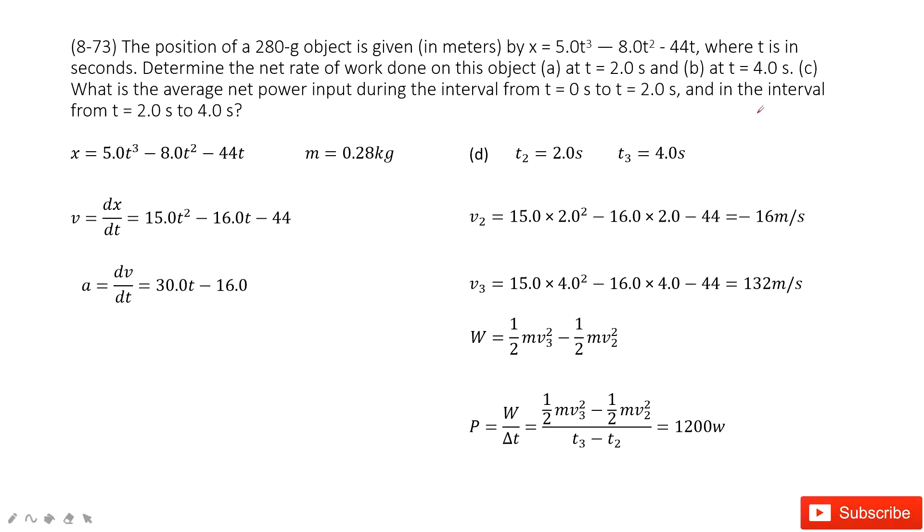The next one is very similar to the third one. We can find the average power at the time period from 2 seconds to 4 seconds. Similarly, you need to find work in this period. So this comes from work energy principle. Find the final kinetic energy minus initial kinetic energy. And the V2 and V3 can be found on this function. And also the power equal to the work divided by time t. Then we get the final answer.